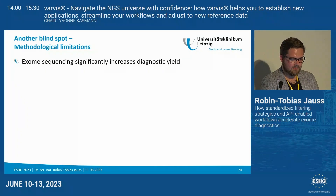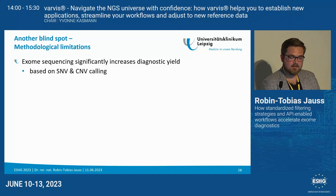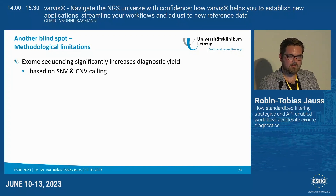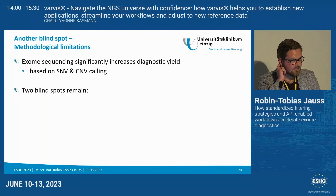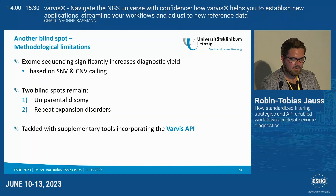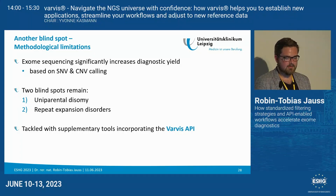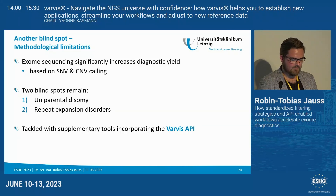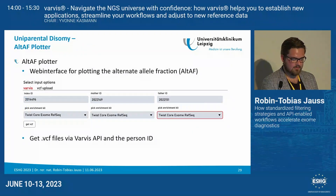Coming back to exome sequencing: we definitely increase the diagnostic yield, but most exome sequencing still only considers SNV and CNV calling, leaving two remaining blind spots — uniparental disomies and repeat expansion disorders — which we are usually not able to detect in a standard exome sequencing approach. The good thing is that we can tackle these problems by creating supplementary tools which incorporate the Varvis API.